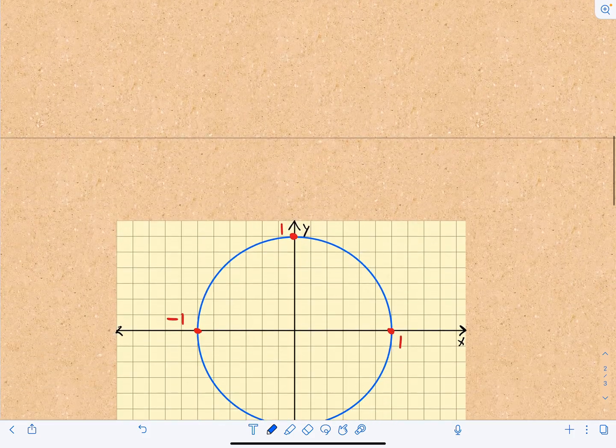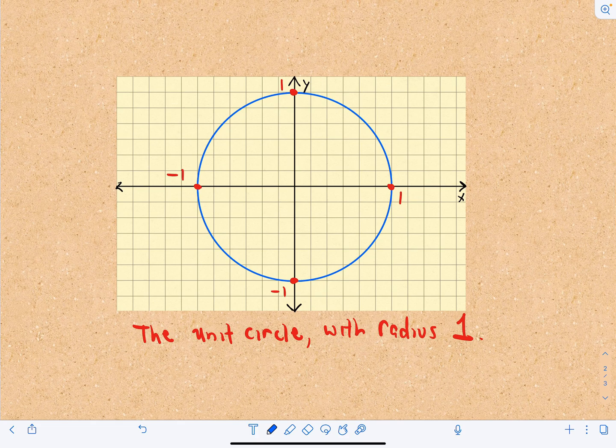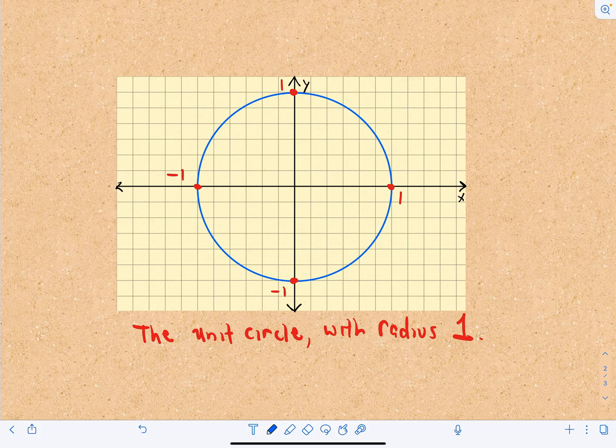So, one other little thing to talk about. For those of you taking pre-calculus or calculus, if you haven't encountered it yet, you no doubt will. And that's the unit circle. The unit circle is very important in trigonometry. The unit circle is just a circle with radius one.